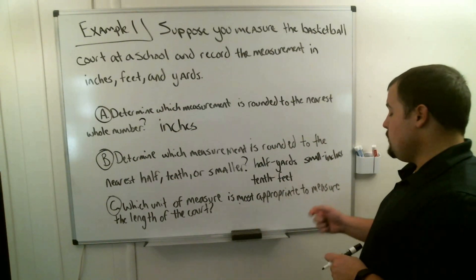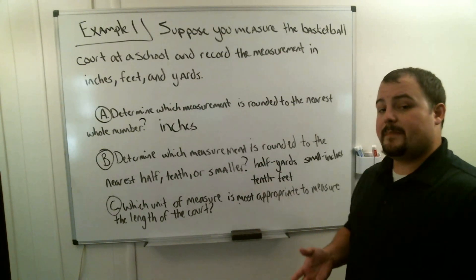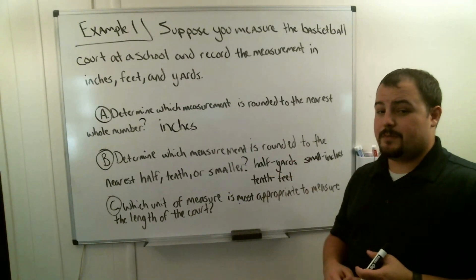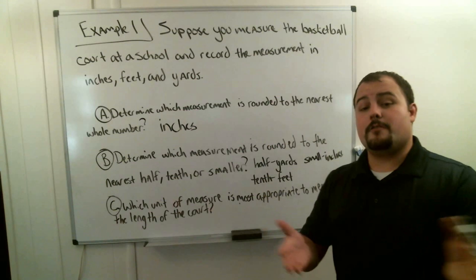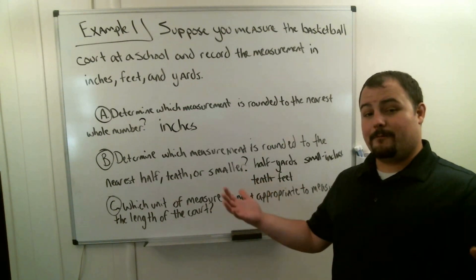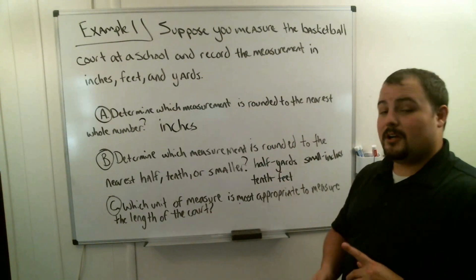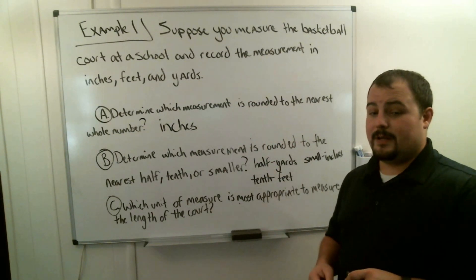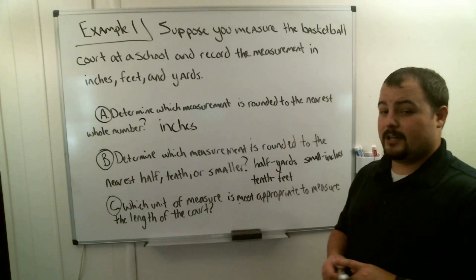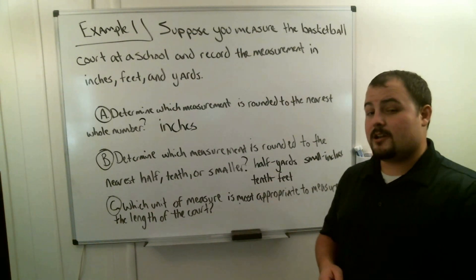In Part C, it asks which measurement is most appropriate for finding the length of a basketball court. If you were measuring a basketball court, do you really think you'd measure it in inches or yards? The best unit of measurement is actually feet. For a football field, yards make sense because they use yards for first downs. But a basketball court isn't too large, so measuring in feet is still pretty accurate and appropriate.